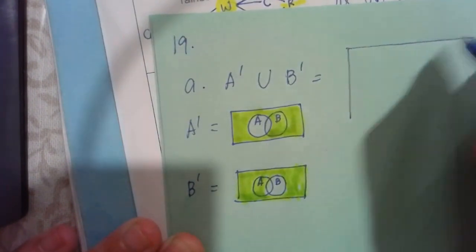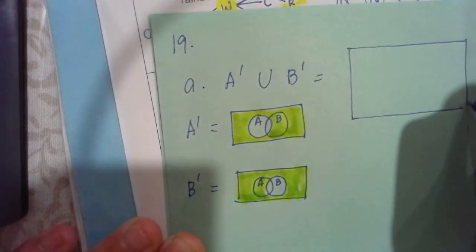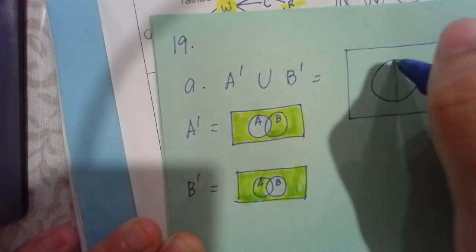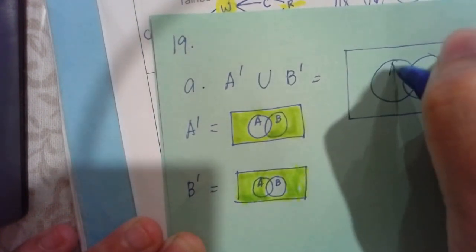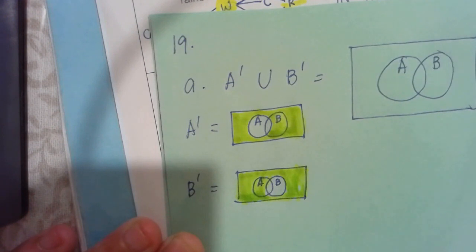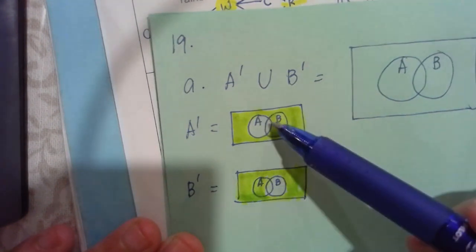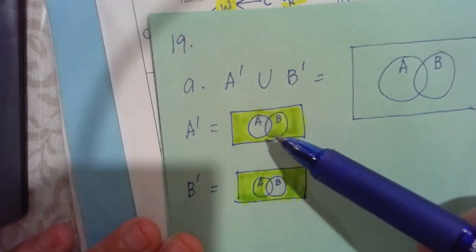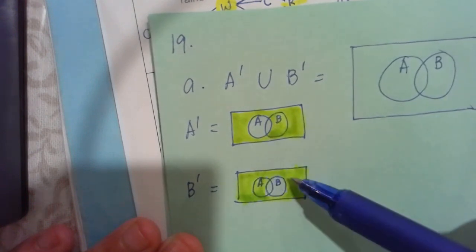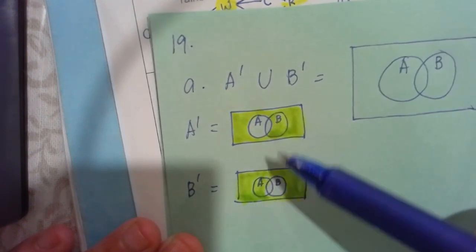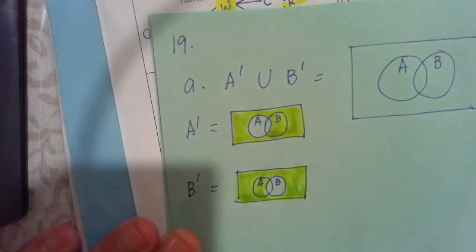So therefore, I'll put it in a bigger one. So A and B. Meaning this part right here would be shaded. That part would be shaded. Same thing here. But this in the middle is not. So that's the answer.